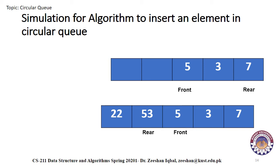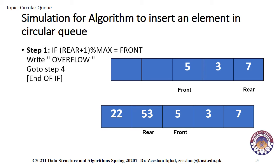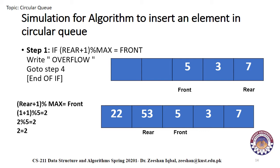Here we can see that the queue is now full. To denote that condition, we can write it as rear plus one modulus max equals front. Currently front index is two and rear index is one. By putting these values into the condition, the equation evaluates to true. So we print overflow and exit to step four, as no further value can be added.